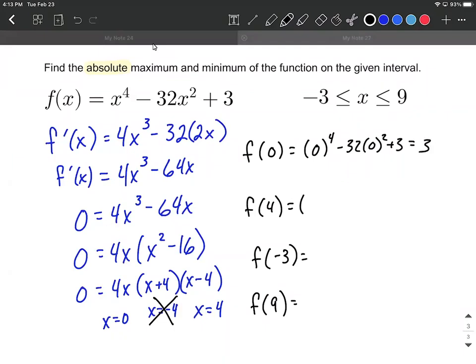When we plug in 4, very similar, right? We've plugged into functions. Going back to the original, 4 to the fourth power minus 32 times 4 squared plus 3 is going to equal negative 253. I'll leave the order of operations up to you.